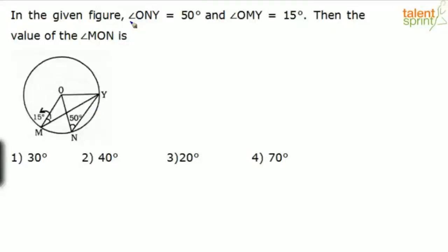In the given figure, angle ONY equals 50 degrees and angle OMY equals 50 degrees. Then the value of angle MON is to be found. So two angles have been given and the figure is already there.